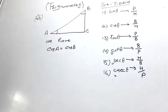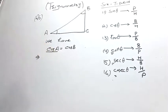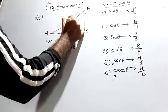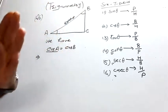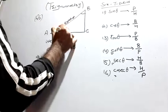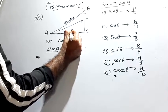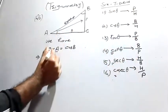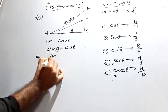Now, cos theta is equal to base upon hypotenuse. In a right triangle, the hypotenuse doesn't change, but if we consider angle A, its opposite side (perpendicular) is BC, and the base is AC. So cos A equals AC upon hypotenuse AB.